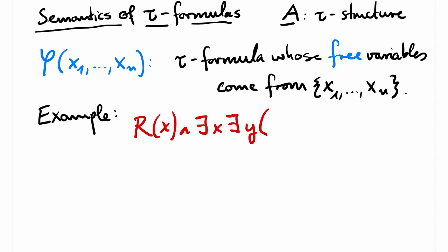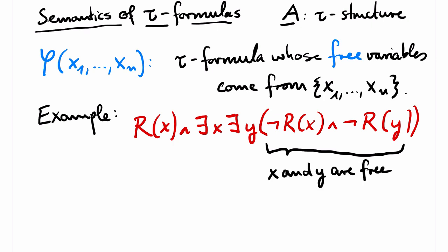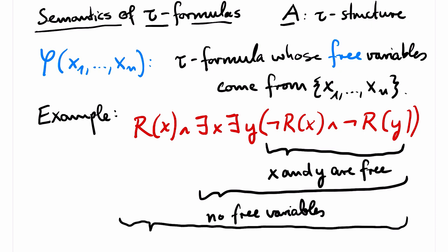I am writing here some tau formula. The idea is that a variable is free if it is not existentially quantified. The subformula not r of x and not r of y, for instance, has two variables and no quantifiers, so both variables x and y are free. The subformula that starts with exists x, exists y, has no free variables, because all of its variables are existentially quantified. On the other hand, the entire formula does have free variables, again, because of its first conjunct, where x appears freely.